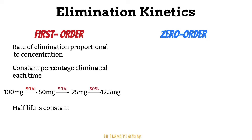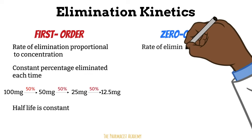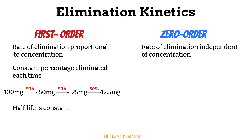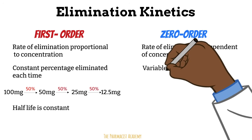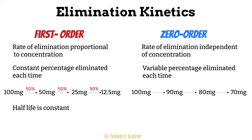Drugs eliminated through zero-order kinetics, such as aspirin, have a rate of elimination that is independent of the concentration. The same milligram amount is eliminated each time, but the percentage eliminated each time will change. Starting with 100 mg, the same milligrams are eliminated each hour, but the percentage changes. If a patient overdoses on a drug following zero-order kinetics, the body will clear the same milligrams per time regardless of the amount or duration. Finally, the concept of half-life becomes meaningless because the drug concentration does not decrease by half with every predictable time interval.